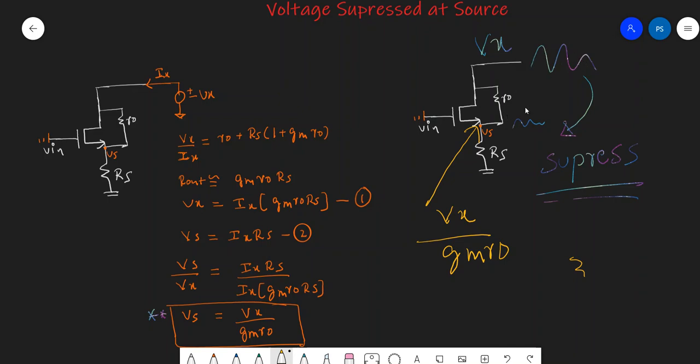The voltage that will appear at the source terminal, that is V_s, would be V_x divided by g_m R_O, or it is suppressed. There is a suppression of voltage, so this node voltage will not move very much.